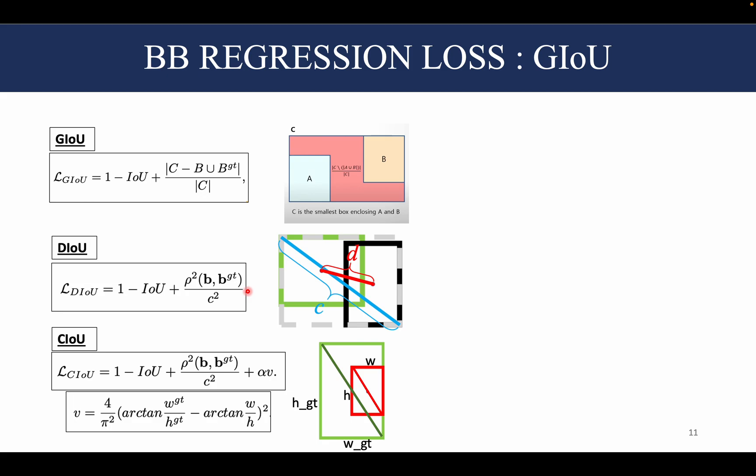A further improvement over DIoU was the complete IoU, or CIoU, which takes the DIoU loss and adds another term, which basically is this equation here and is aiming at making the aspect ratios of both the ground truth bounding box and the predicted bounding box the same.